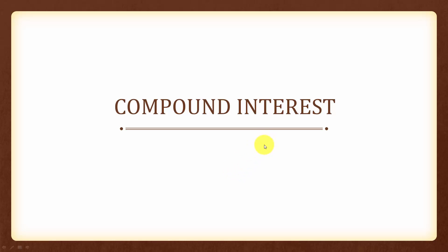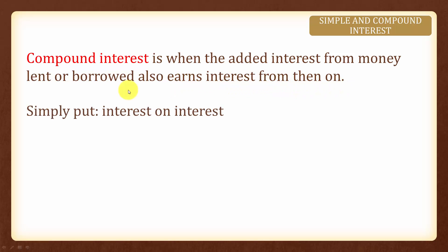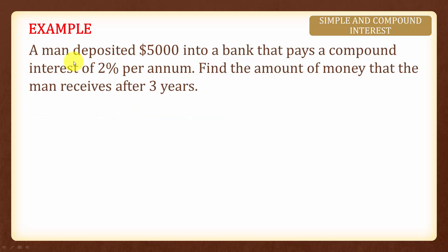Now let's look at compound interest. Compound interest is when the added interest from the money lent or borrowed also earns interest from then on. In other words, it is interest on interest, which means that we will earn interest from the interest that we have earned previously. In this example, a man deposited five thousand dollars into a bank.